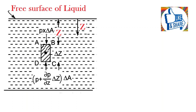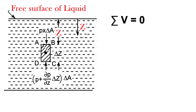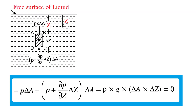Here we are considering all vertical forces acting on the fluid element. For the equilibrium condition, sigma vertical equals zero. The first vertical force acts on face AB in the downward direction, so it is considered as a negative sign. The second pressure force acts on face CD in the upward direction, so it is considered as a positive sign. The weight acts in the downward direction due to gravity.